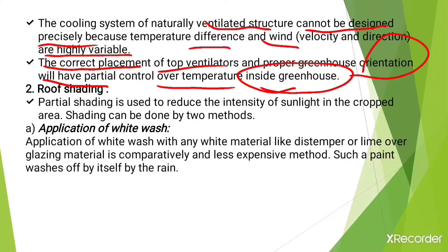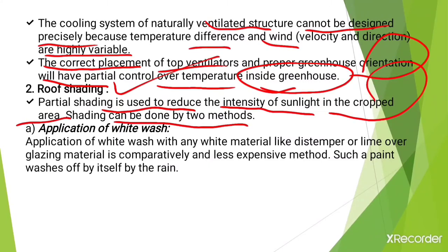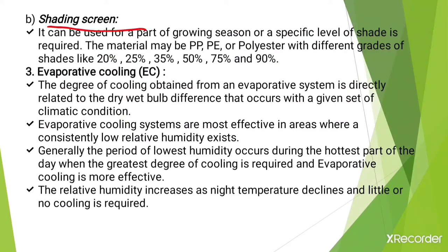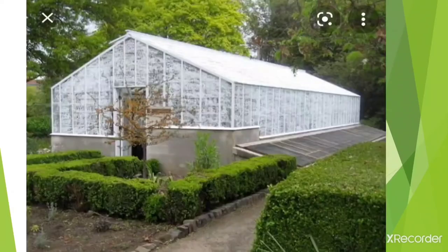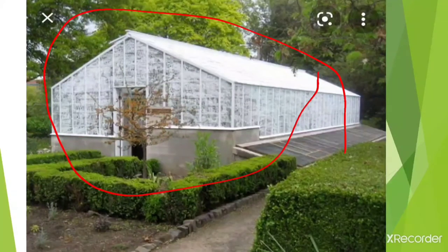The next method is roof shading. Partial shading is used to reduce the intensity of sunlight in the crop area. Shading can be done by two methods: first, application of whitewash, and second, shading screen. Application of whitewash with any white material like distemper or lime over the glazing material is a comparatively less expensive method, and such paint washes off by itself by the rain. This increases the shading effect.